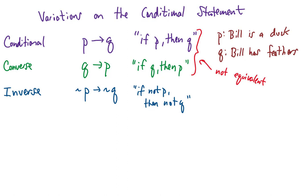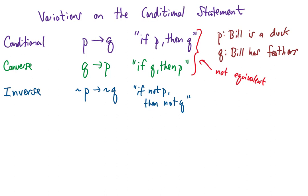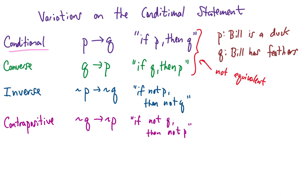Finally let's introduce the contrapositive of the conditional statement. The contrapositive is if not Q then not P. Given our example for P and Q the contrapositive would read if Bill does not have feathers then Bill is not a duck. And you could build a truth table for this but as it turns out the conditional and the contrapositive are equivalent statements.